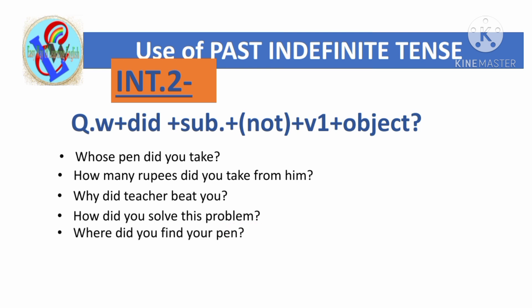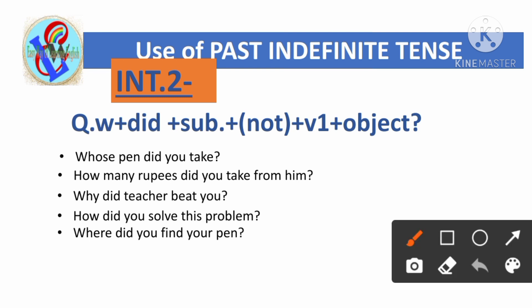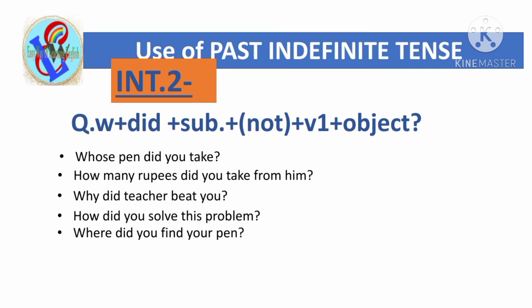'Where did you find your pen?' Here 'where' is the question word, then 'did', then 'you' is the subject, 'find' is the first form of the main verb, and 'your pen' is the object.